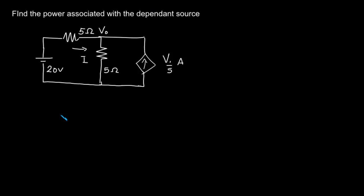We are asked to find out the power associated with the dependent source. To find out the power of a current source, what we need is the voltage across it.